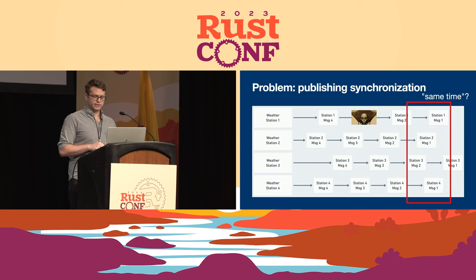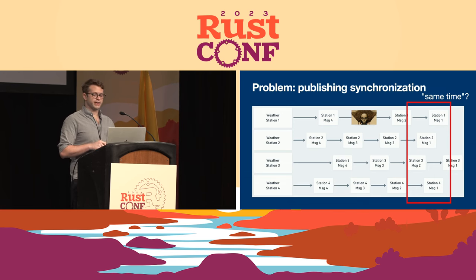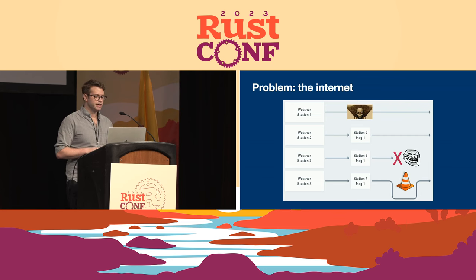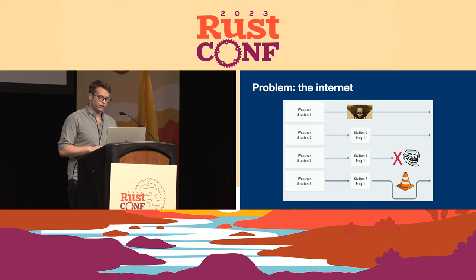Should the window be here or here? In station three, message one and two both kind of land on that window boundary — which of these two messages should count is kind of up to you. The next problem is that between the weather station and PubSub, there exists this pesky thing called the internet. Some messages will go from the weather station to the message queue system just fine. Other messages will get lost or need to be retransmitted, resulting in duplicate messages or a missing message entirely. Other messages might take a detour and arrive later than expected due to network congestion. All of this combines to give you the problem of message ordering.